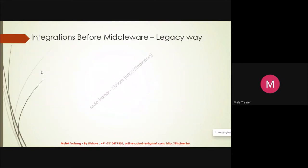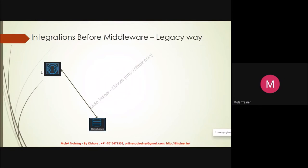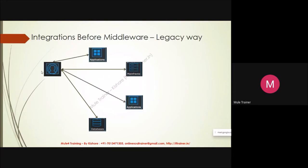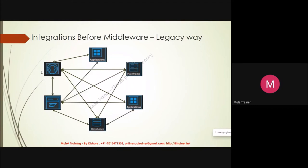Before middleware, how did people integrate systems? Systems used to directly send data to other systems and receive responses back — one-on-one. If you have five or six systems all needing to integrate with each other, every system must communicate directly with every other system, resulting in a very clumsy architecture. As systems keep increasing, the confusion keeps increasing.